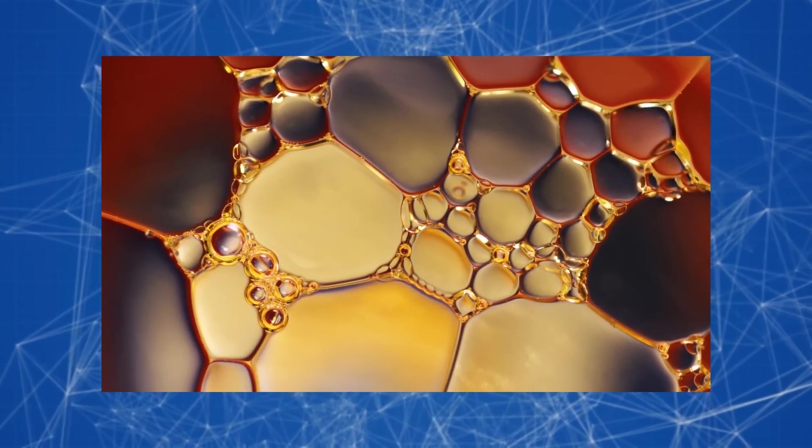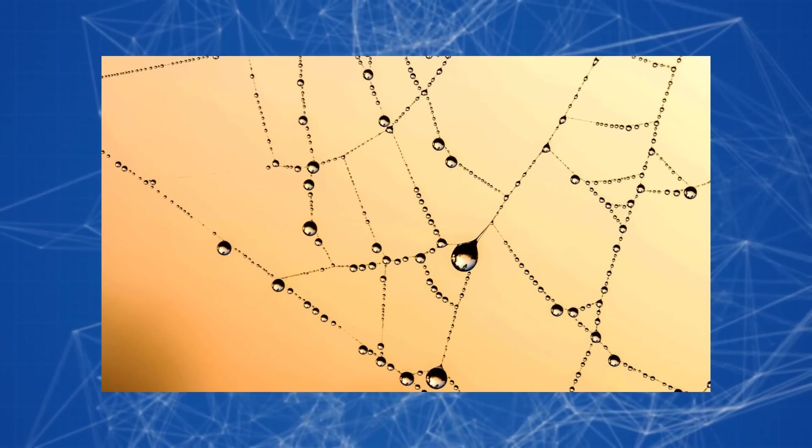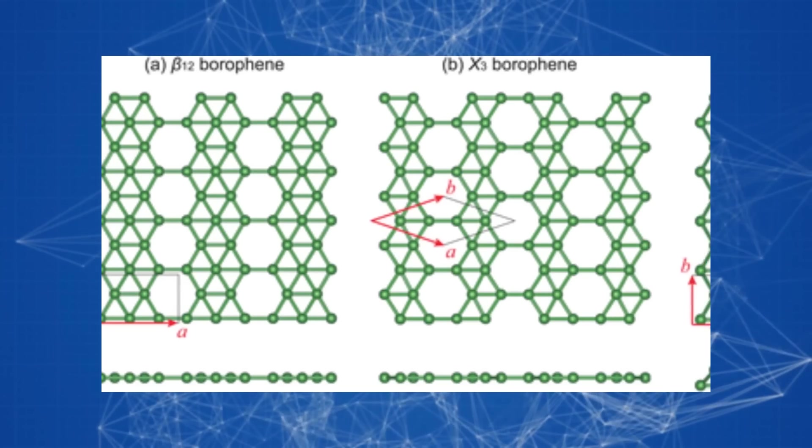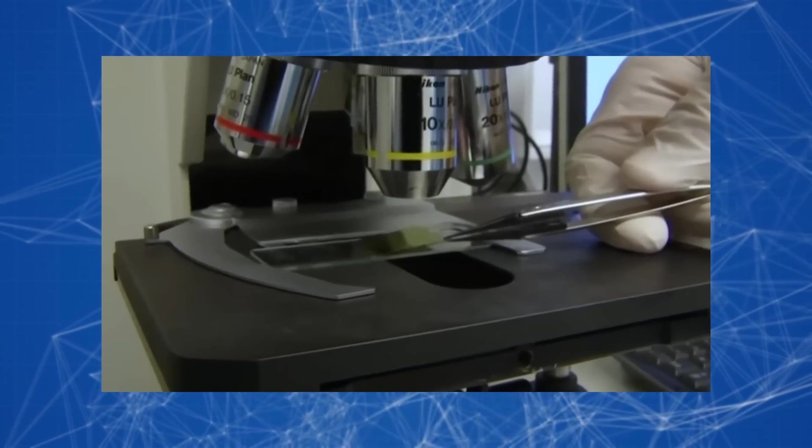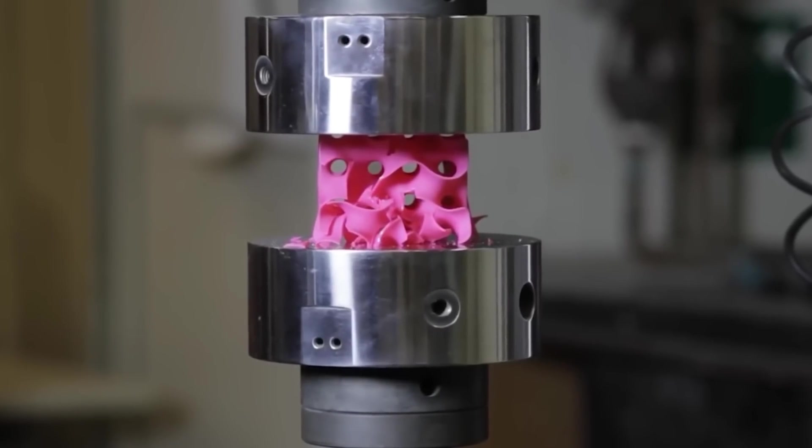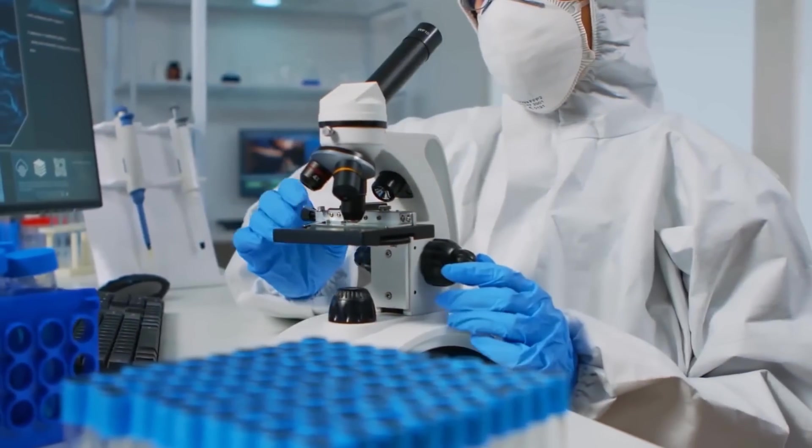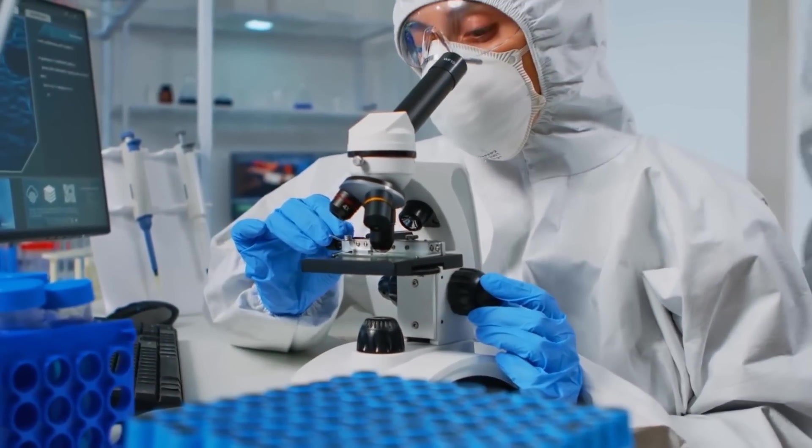Single layer borophene was able to be synthesized using chemical vapor deposition. This is a process in which a hot gas of boron atoms condenses on the cold surface of pure silver. Dreams to create a multi-layer borophene with a possibility of interlayer energy storage then seemed fantastic.